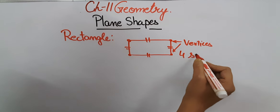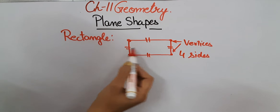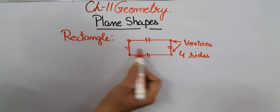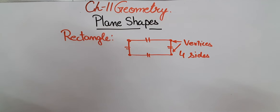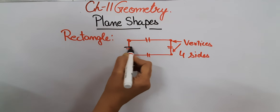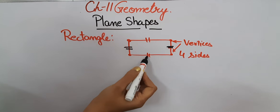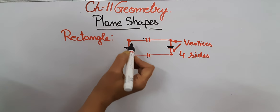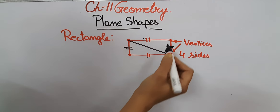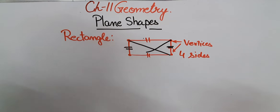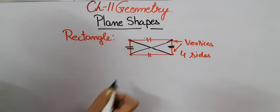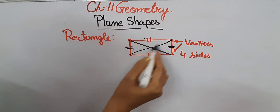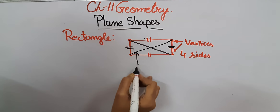Now when you see a rectangle, you should know that two opposite sides of a rectangle are equal. These two opposite sides — this and this — they are equal in length. Similarly these two opposite sides are equal in length. So opposite sides of a rectangle are always equal. Now if we join the opposite vertices, for example from this to this and from this to this, these two line segments which are crossing each other will be known as the diagonals.